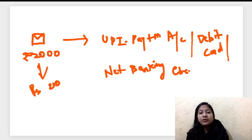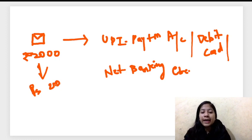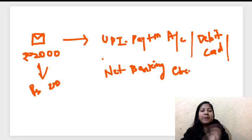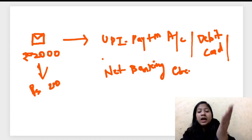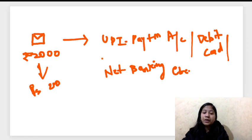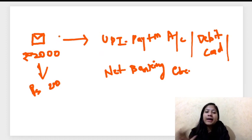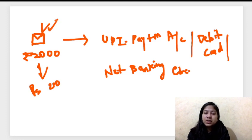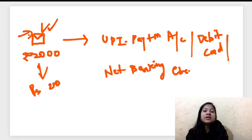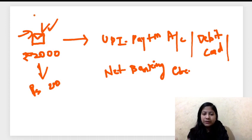Whenever your limit of ₹2000 is exhausted, you can use any of these methods — be it UPI, Paytm payments account, UPI channels, debit or credit card, or net banking — through the online mode to refill your wallet. Once refilled, you would not require any internet or telecom connectivity to spend the money in this wallet. The technology on which this wallet will work is something RBI has not yet revealed.